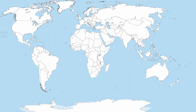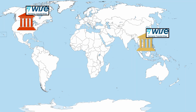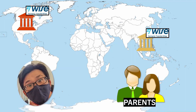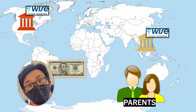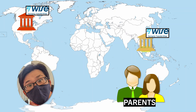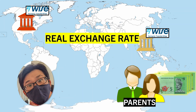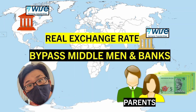Wise has many banks all over the world, so technically while it looks like I am transferring money from myself to my parents, in reality it works like this: I pay to a Wise bank account in USD, while Wise then pays to my parents the amount of Malaysian ringgit dictated by the real exchange rate — thereby bypassing all the middlemen and banks in between.